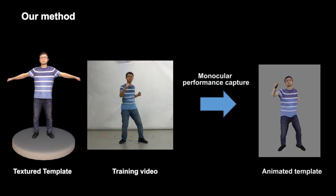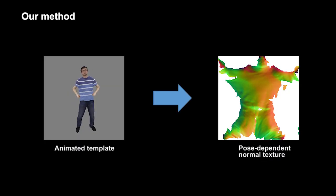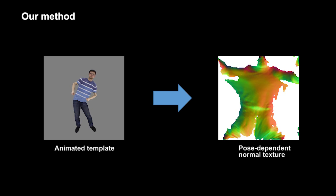First, we track the motion of the person using an off-the-shelf monocular performance capture algorithm. Next, we encode the tracked motion into a normal texture sequence.